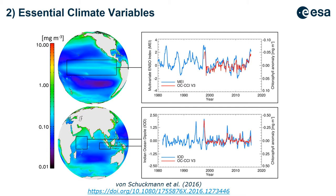Phytoplankton have been referred to as the canary in the coal mine for climate. This diagram illustrates that with a time series of chlorophyll concentration in red from OC-CCI — the Ocean Colour Climate Change Initiative — overlaid on the multivariate ENSO index and the Indian Ocean Dipole. These de-seasonalized time series show how tightly coupled phytoplankton are to changes in their environment, and hence why they are an essential climate variable.